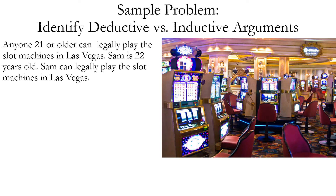Let's look at some sample problems. We're trying to identify whether these arguments are deductive or inductive, based on our interpretation of the intention of the person giving the argument. General tips: if the argument is actually valid, we can interpret it as deductive. If it's not valid, then we have to ask — was this intended to prove the conclusion absolutely based on the premises, in which case it's deductive? Or was it only intending to make the conclusion probable based on the premises? In that case, it's inductive.